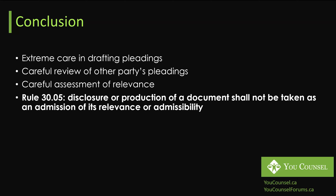A related and important rule to keep in mind is Rule 30.05, which states that disclosure or production of a document shall not be taken as an admission of its relevance or admissibility. This means that if you err on the side of caution and disclose documents you believe may be relevant — even if you're unsure — that does not mean you are admitting the document is indeed relevant. The other side cannot hold you accountable and claim you've confirmed admissibility. There is no deemed relevance or deemed admission just because a document has been disclosed, so if you include documents you were unsure about, at trial you can still state that you believe they were not relevant.